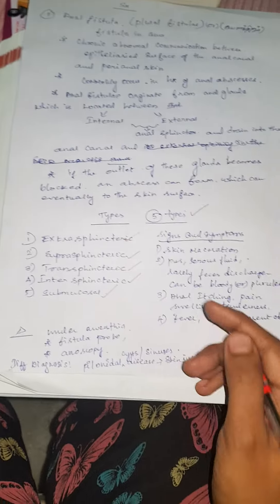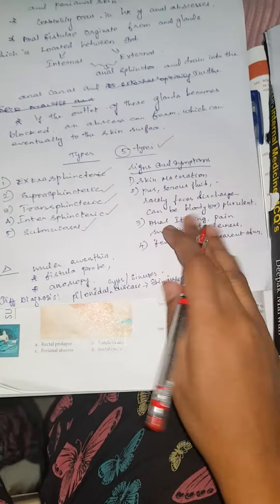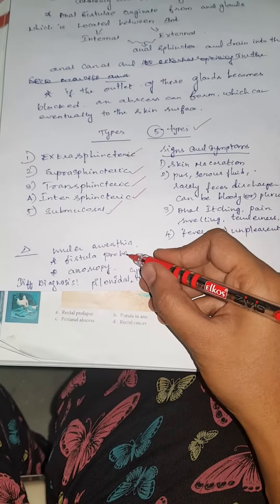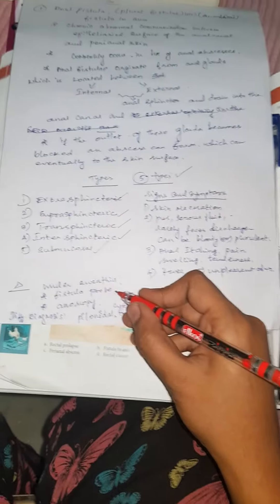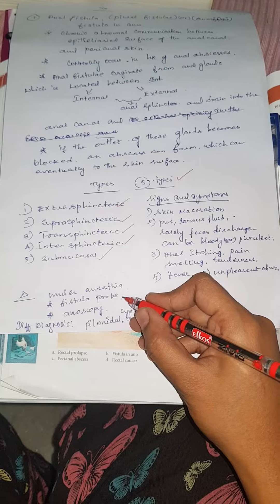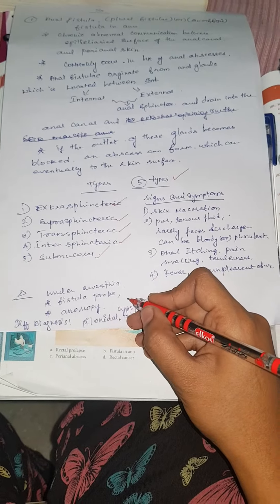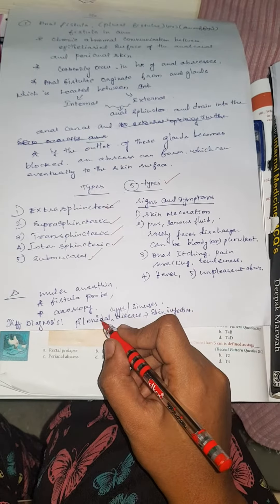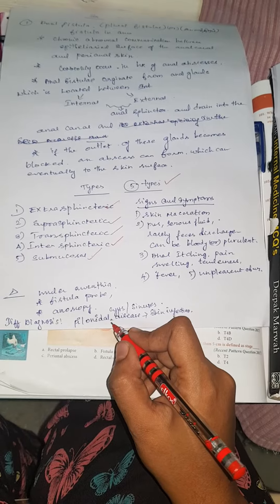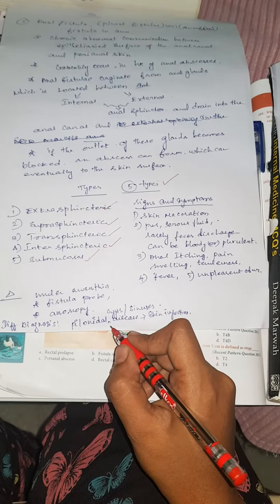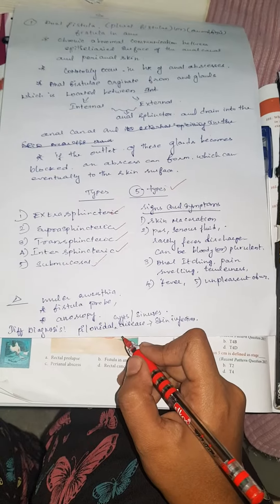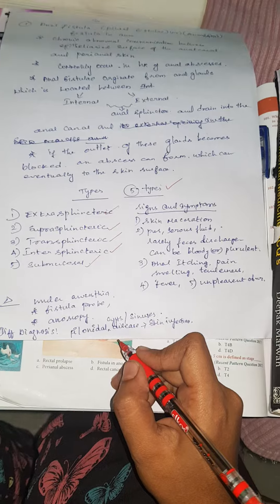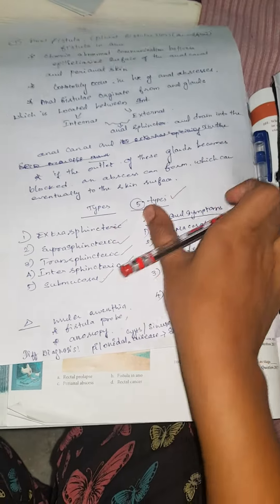To diagnose anal fistula, under anesthetic a fistula probe may be used, along with anoscopy. The differential diagnosis includes pilonidal cyst, which is a skin infection commonly occurring in the buttocks and cheeks.